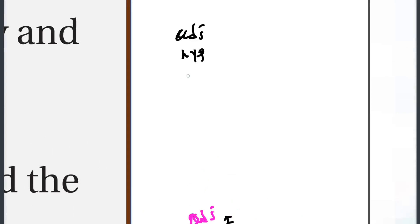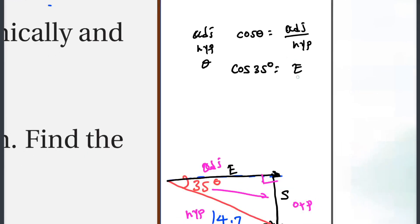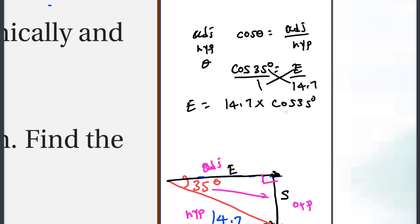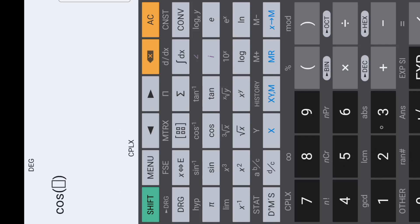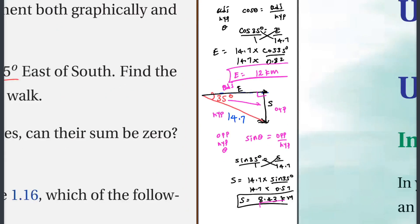The east component is adjacent, so we use cosine. Cosine theta equals adjacent over hypotenuse. Cosine of 35 degrees equals approximately 0.819. Therefore the south component equals 0.819 times 14.7, giving approximately 12 kilometers south.